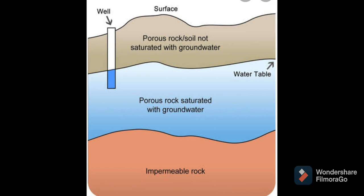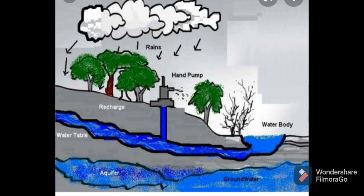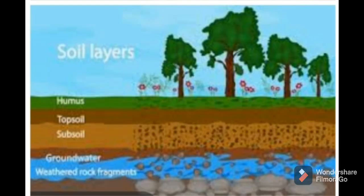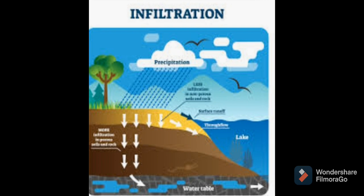Rainwater and water from other sources such as rivers and ponds seeps through the soil, going deep into the ground and filling the empty spaces and cracks deep below. This process of seeping water into the ground is called infiltration. The groundwater gets recharged by this process — so even though we continuously use water from hand pumps and tube wells, this water gets recharged by the process of infiltration.